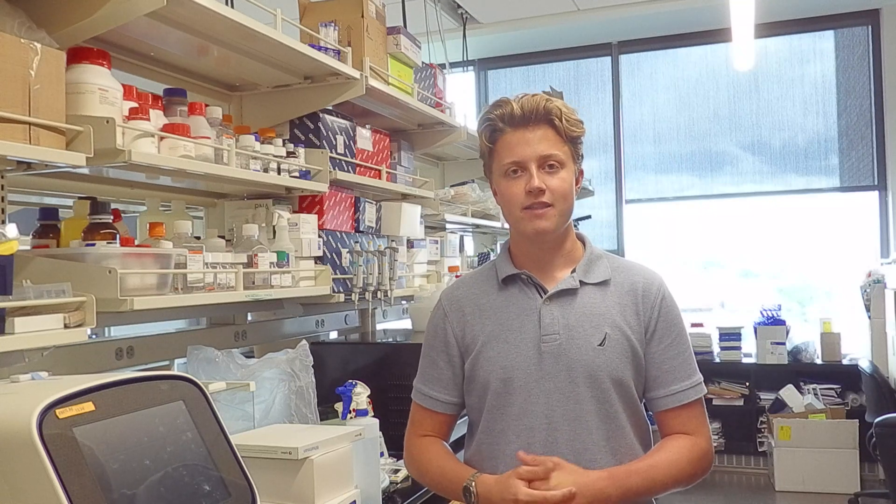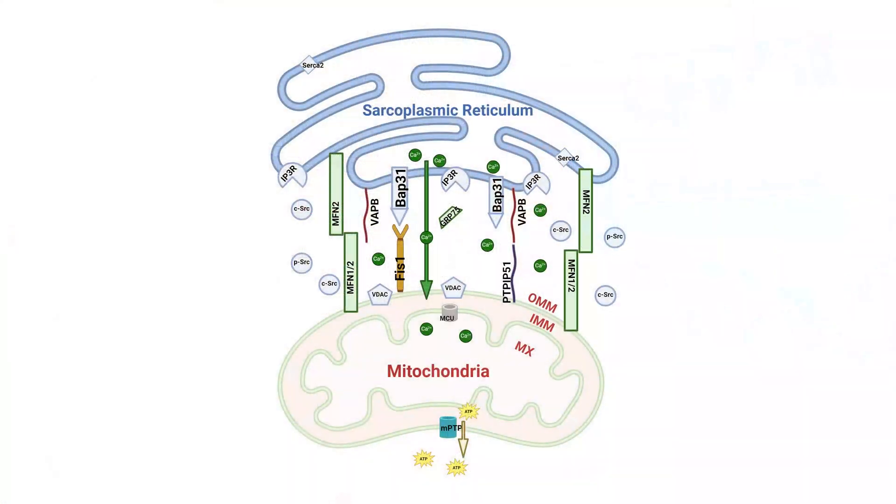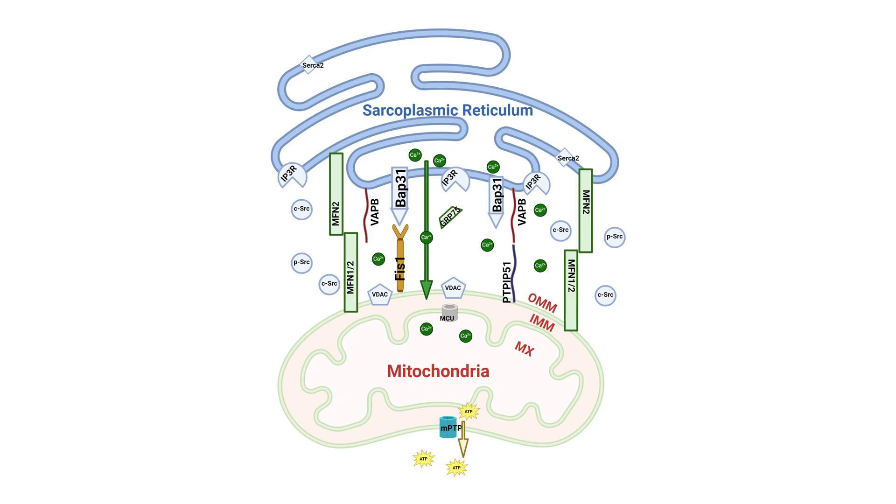For our study, we took mice that we induced atrial fibrillation in, and we wanted to see if these proteins were different compared to wild-type normal healthy mice. From our results, we found that these proteins are being down-regulated, which tells us that the distance between the SR and the mitochondria is now increasing, which tells us that calcium transport to the mitochondria has decreased, resulting in less ATP, less ROS production, and overall worse mitochondrial function. We think this might be a cause of atrial fibrillation. Thank you.